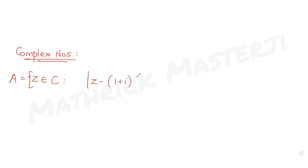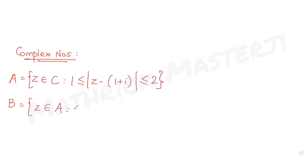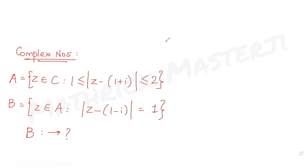The modulus of z minus (1 + i) ranges from 1 to 2. The other set B consists of z belonging to A, meaning B contains elements common to A and a second condition. That condition is: the argument of z minus (1 - i) in brackets equals 1. We are asked what set B is and how many elements it contains.